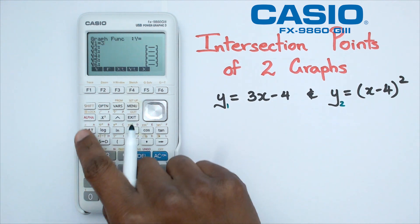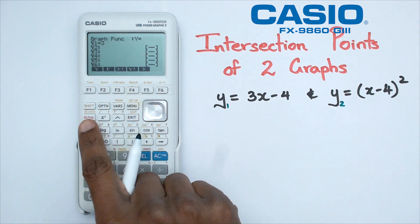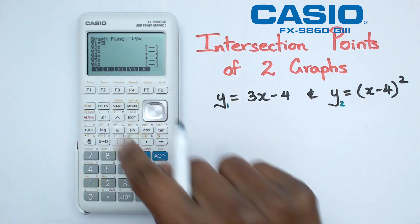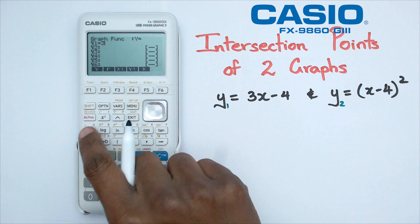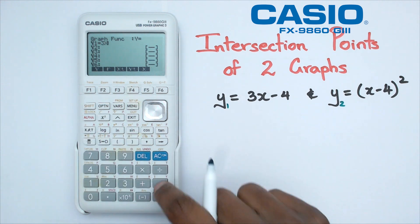So I'm going to do 3x minus 4 as first. So I've got 3. And for the x, I'm going to use the x underneath the alpha. It would be better not to use alpha x because that actually gets stored as a value. So we want to be using x, which is the variable in this case. So we're going to go 3x minus 4.